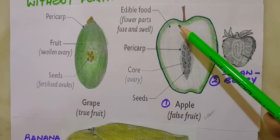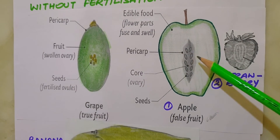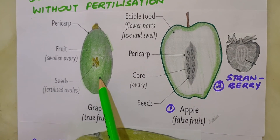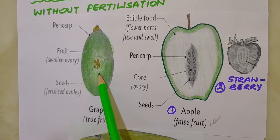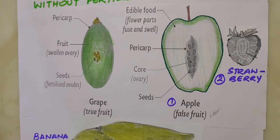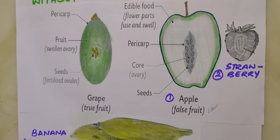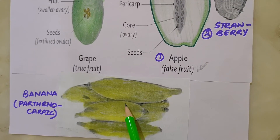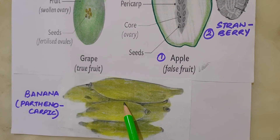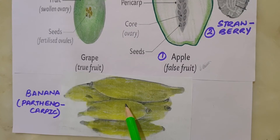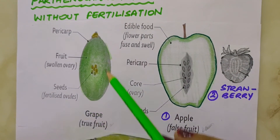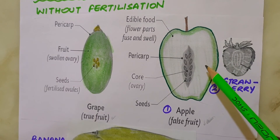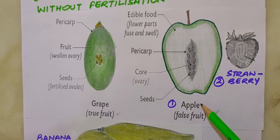Fruits in which parts of the flower besides the ovary are involved in fruit formation are called false fruits. On the other hand, fruits like mango, papaya and grapes develop only from the ovary and are called true fruits. Although in most species fruits are the result of fertilization, there are a few species in which fruits develop without fertilization — such fruits are called parthenocarpic fruits. Banana is one such example. Parthenocarpy can be induced through the application of growth hormones, and such fruits are seedless. Apple and strawberry are examples of false fruits.